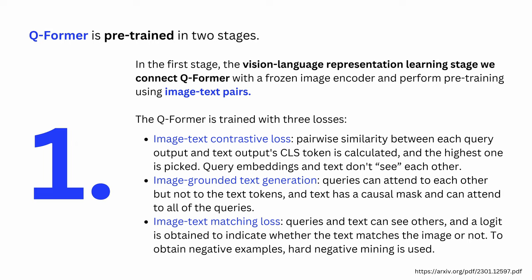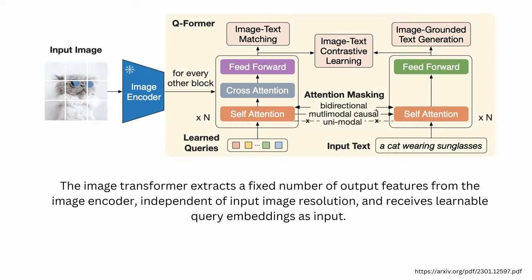They found the best approach is to use three different loss functions in the first stage: an image-text contrastive loss (like in standard BERT systems), an image-grounded text generation loss, and an image-text matching loss. All the details are in the original research paper.